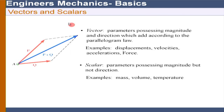For vectors and scalars: vectors have both magnitude and direction. However, that is not the sufficient condition — vectors must also be added according to the parallelogram law. If I have P and Q, two vectors, and draw a parallelogram, then the diagonal gives the resultant. Vector quantities are displacement, velocity, acceleration, and force. A scalar quantity possesses only magnitude but not direction, such as mass, volume, and temperature.